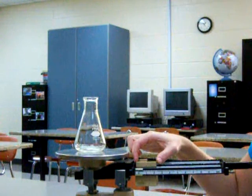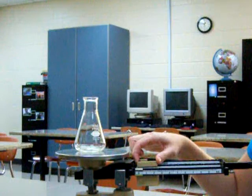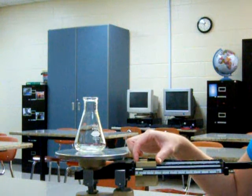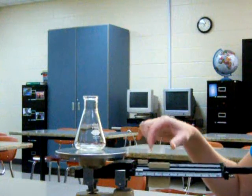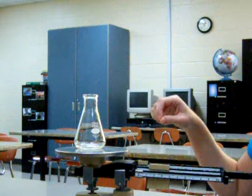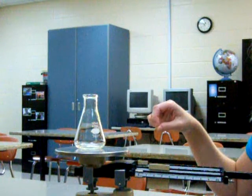The first step is to move the largest rider, which is the one in the middle. We're going to move it over one notch. You have to make sure the riders stick in the notch when you move them or your measurement will not be accurate.